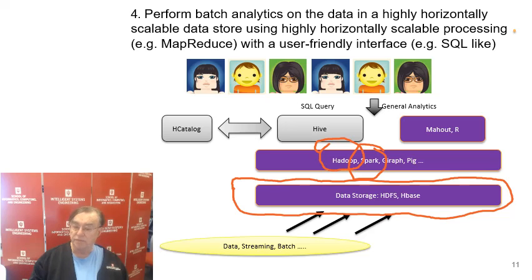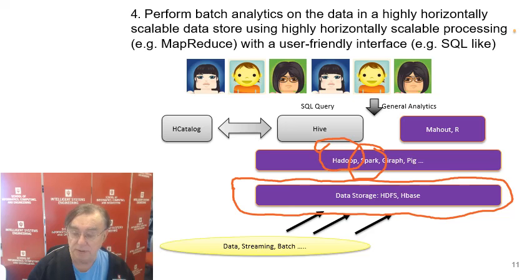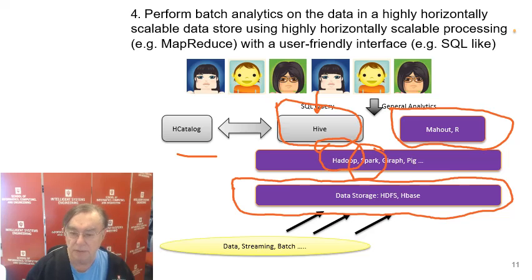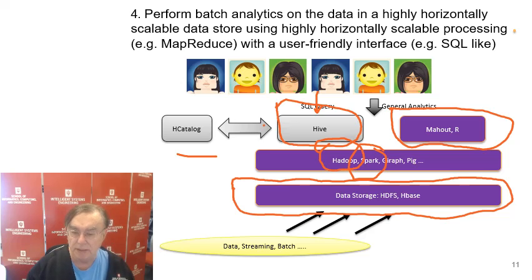Pig is a way of running lots of Hadoop jobs together. Giraffe comes from Facebook and is aimed at processing the graphs that Facebook gets from connections of people. On top of this programming model, say Hadoop, we will run a library with functionalities such as Mahout or R, or we will use a database. Hive is the engine you put on top of Hadoop to make SQL queries, which is good because many people know how to make SQL queries. Hive is controlled by a metadata catalog.